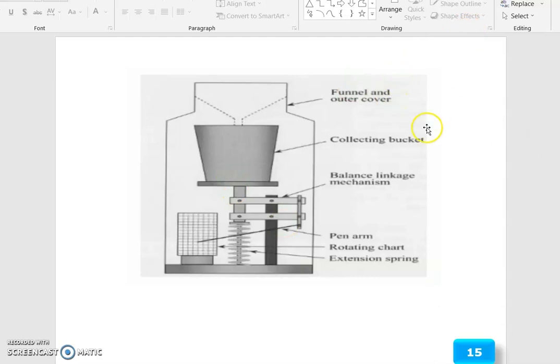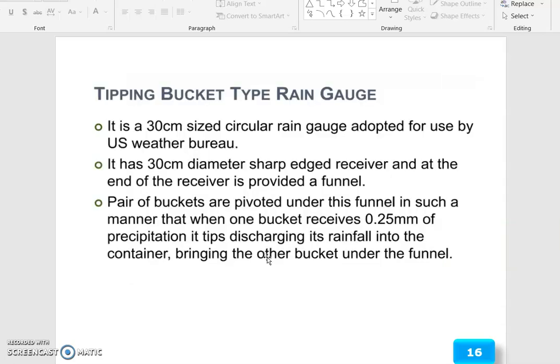See the funnel under the outer cover area, the collecting bucket. Through the bucket, the balance linkage mechanism is identified. Pen arm, rotating chart, then extension spring.